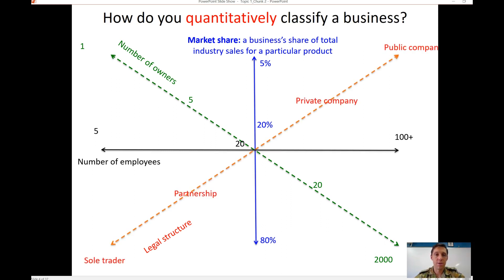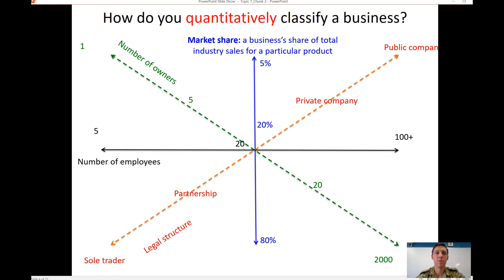In terms of legal structure, different types definitely lend themselves to certain classifications. A sole trader is a business run just by the owner with no other employees, which from a quantitative perspective suggests it's a small business. In Australia, a public company must have more than 50 shareholders, while a private company can have up to 50 shareholders.